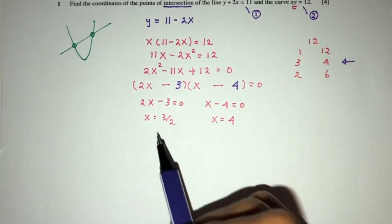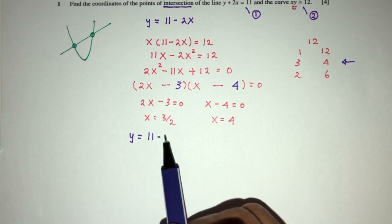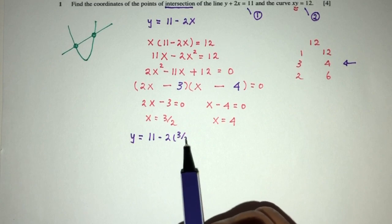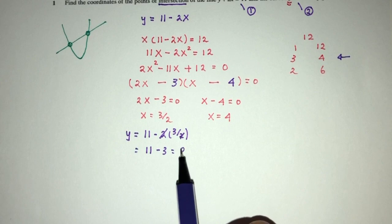Now, for this value of x, let's find the corresponding value of y. So y equals 11 minus 2x. That will be 11 minus 2(3/2). Simplify: 11 minus 3 equals 8.